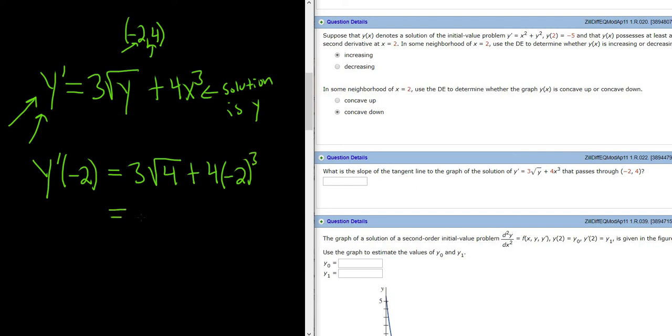This equals 3 times √4, which is 2, plus 4 times (-2)³, which is -8. So we have 3(2) + 4(-8) = 6 - 32 = -24.